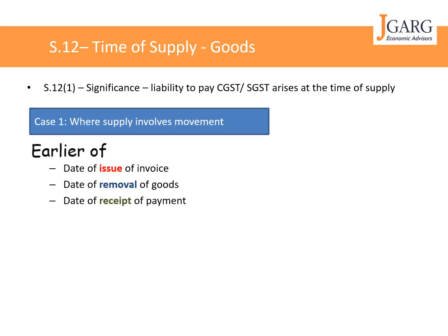A third case within supply involving movement is where you tell the customer you will only deliver the goods once payment is received. The customer makes the payment to your bank account, after which you raise an invoice and then move the goods. In this case, the date of payment is earlier than both the date of invoice and date of removal, so the date of payment becomes the time of supply. This is in line with Section 12 subsection 2 read with Section 28 subsection 1 clause (a).